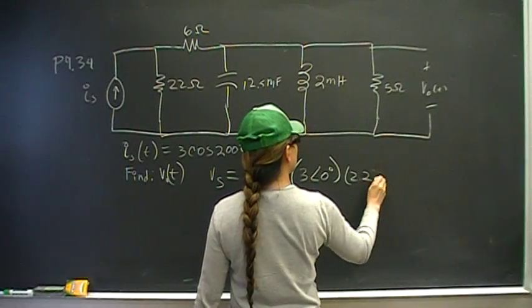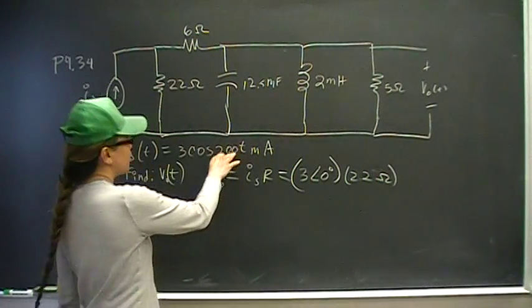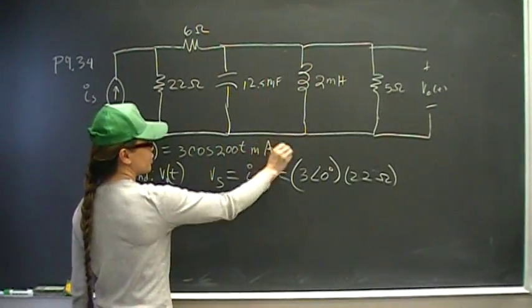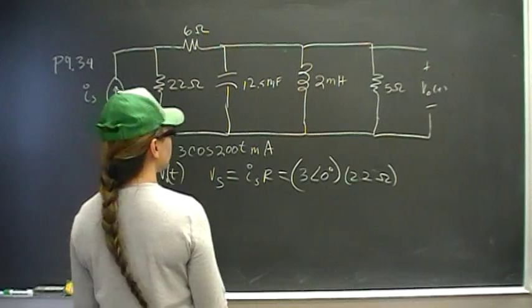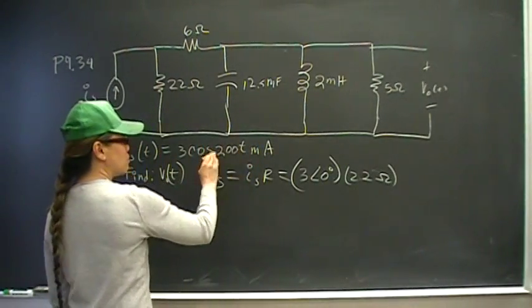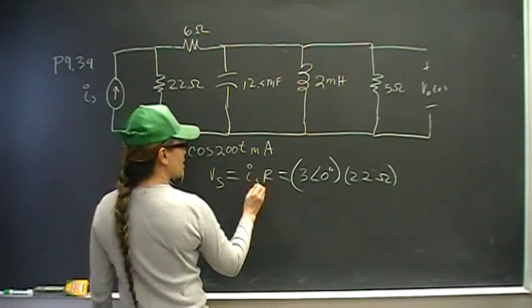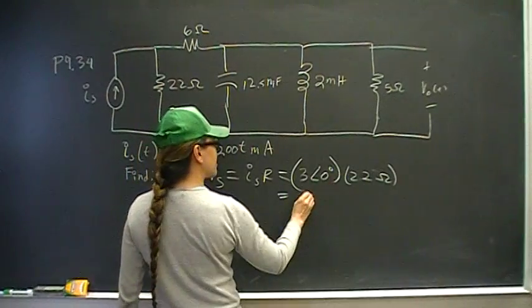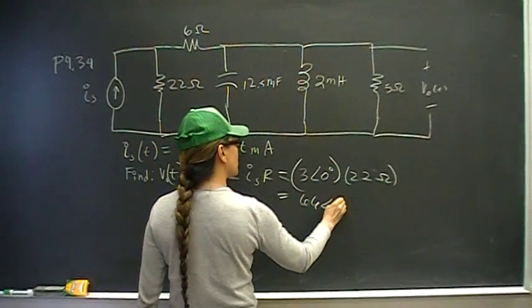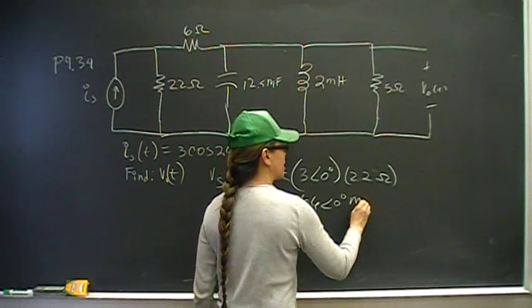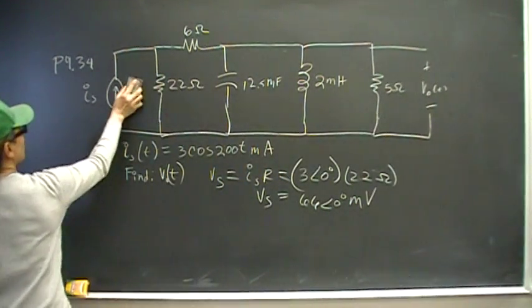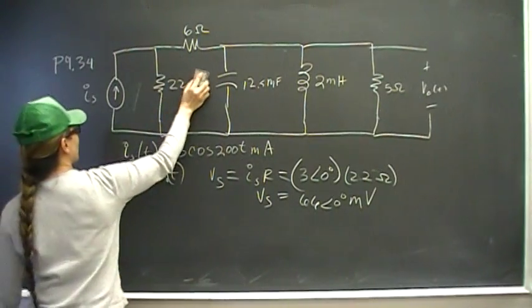So that's going to be times 22 ohms. If there was an angle there, you would get something like 200t plus 30, angle 30, or angle 90, or angle whatever. But no angle means angle is zero. So this becomes 66 angle 0, V_S equals 66 angle 0 millivolts.